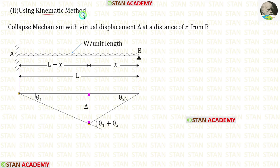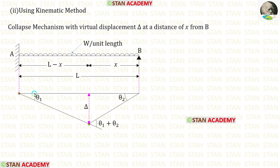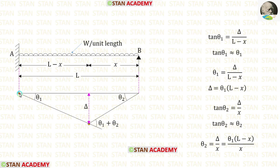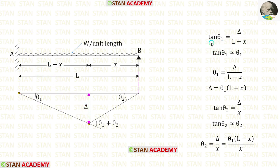Now let us use the kinematic method. Let us assume that the virtual displacement delta occurs at a distance of x from point B. Let us keep this angle as theta1 and this angle as theta2, so this angle should be theta1 plus theta2. Taking this triangle: tan(theta1) = delta / (L minus x). Since the value of tan(theta1) will be very small, tan(theta1) is approximately equal to theta1, so we can take theta1 = delta / (L minus x).